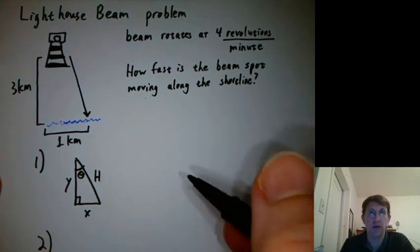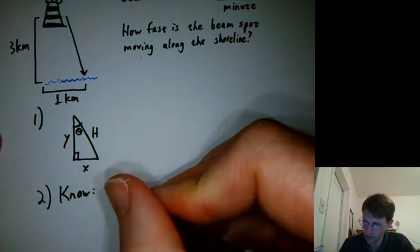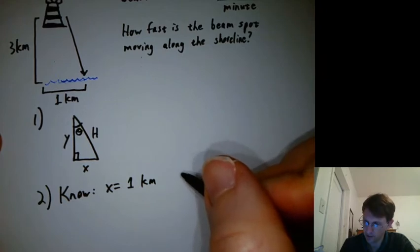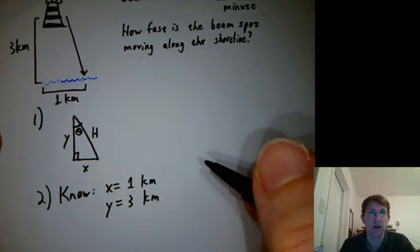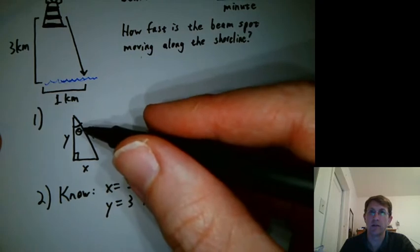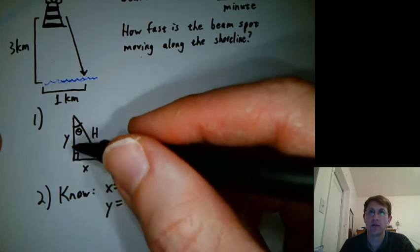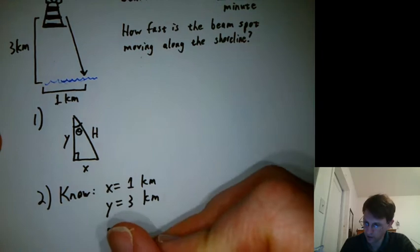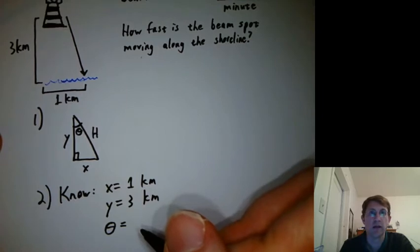Step two, write what we know. So what do we know? x equals one kilometer and y equals three kilometers. What else do we know? Could we figure out what angle would give us a one kilometer along the shoreline when the current... So we know the beam is one kilometer along the shoreline from directly offshore. So we can figure out theta without doing any related rate stuff. So we'll figure that out in a sec.